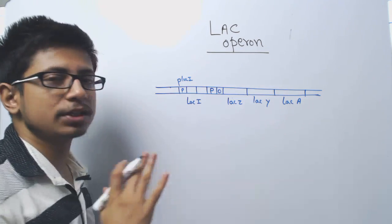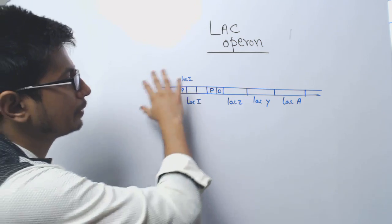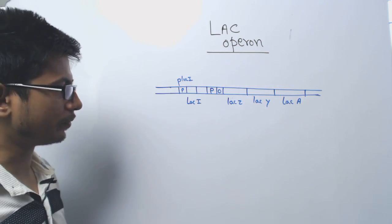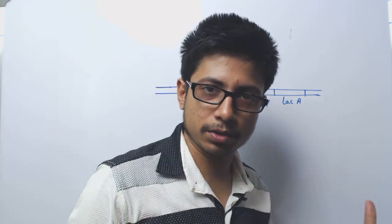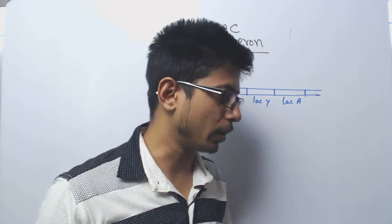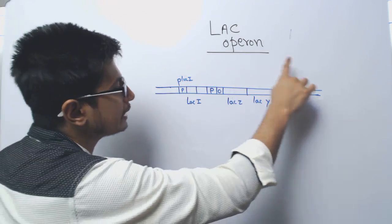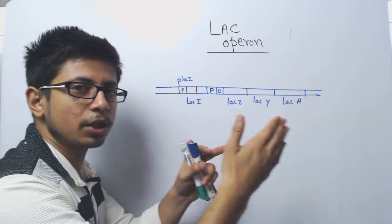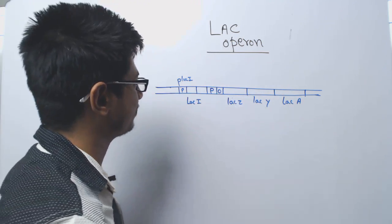This is the complete structure of the lac operon. While we are studying operons like the lac operon, tryptophan operon, or arabinose operon, we need to first understand how the genes are organized, because this will help us understand the whole process.